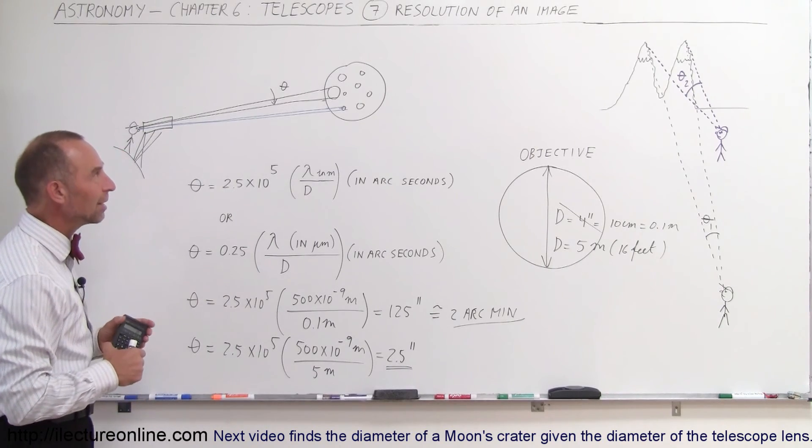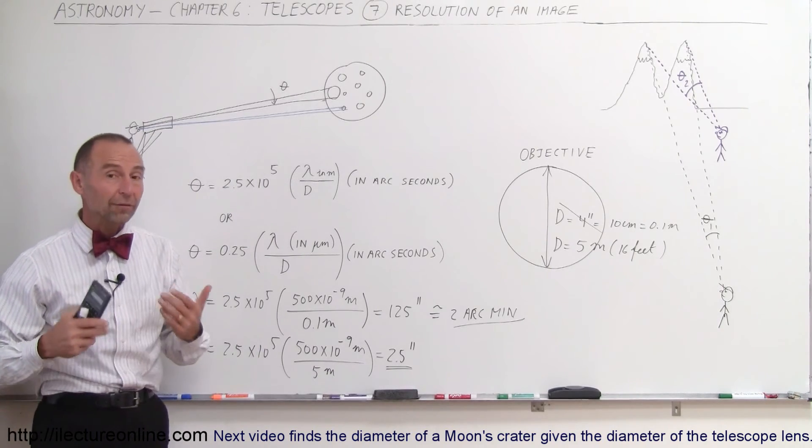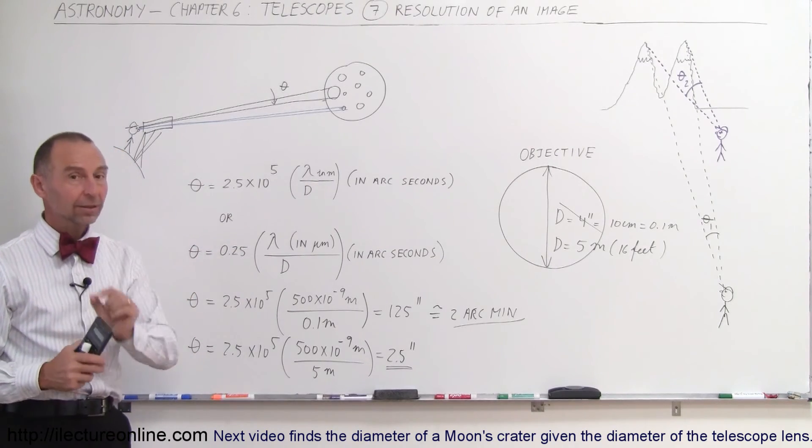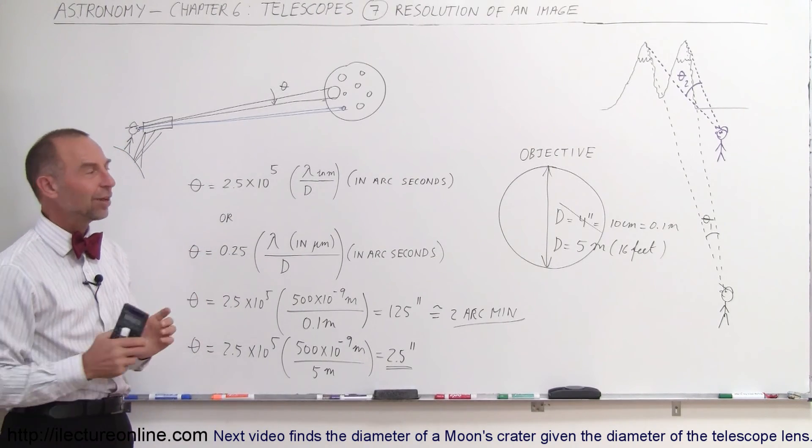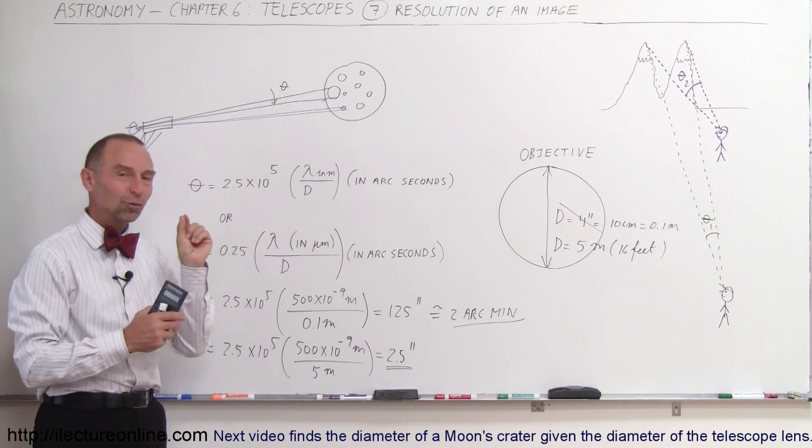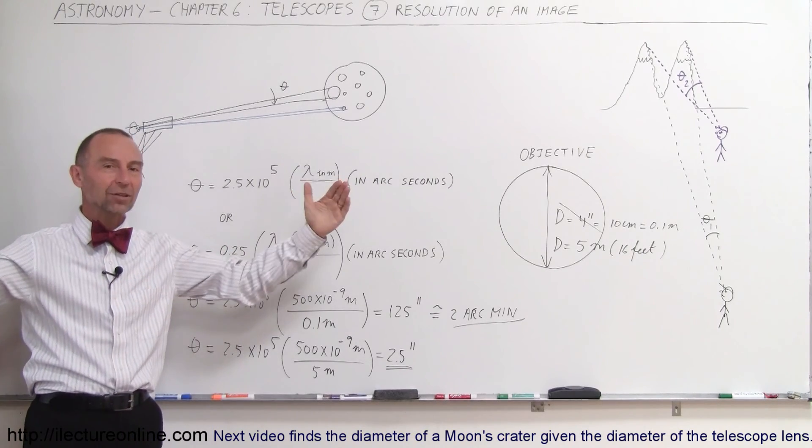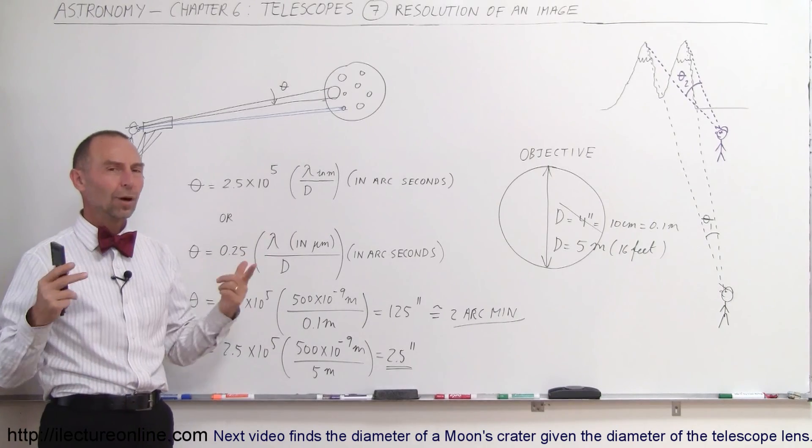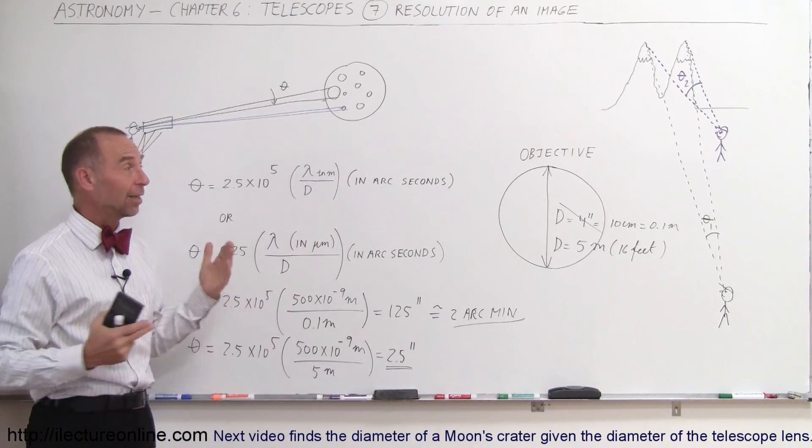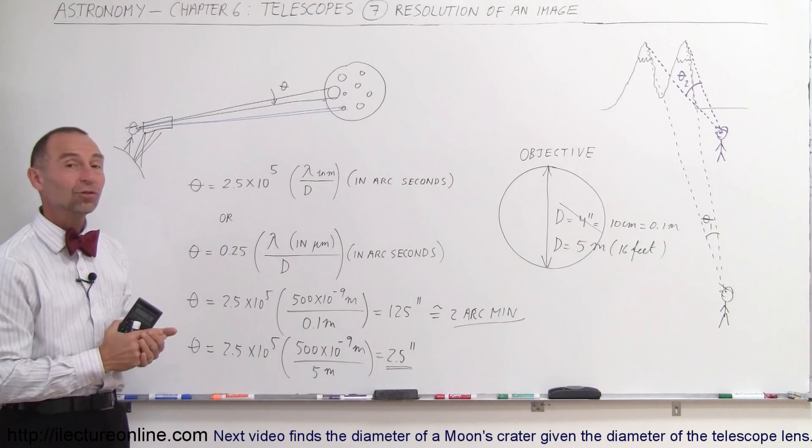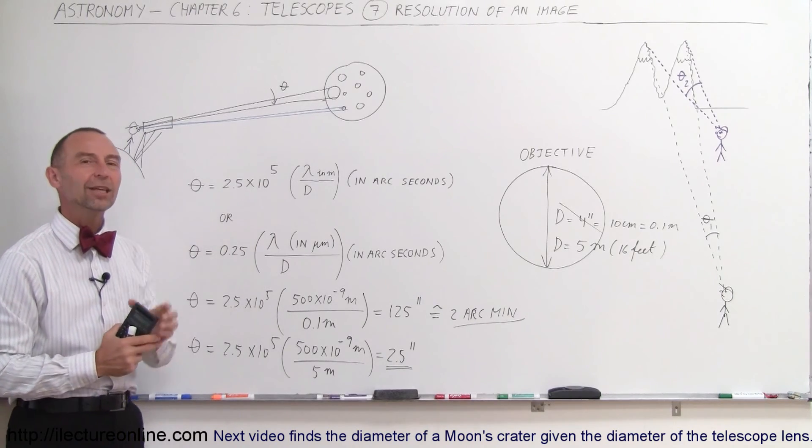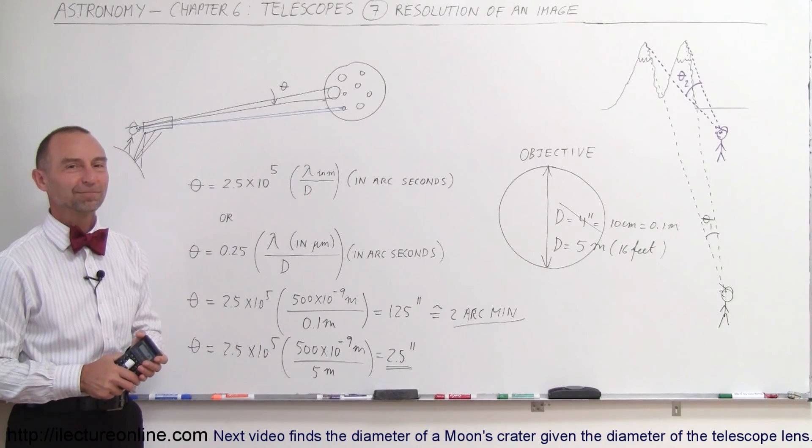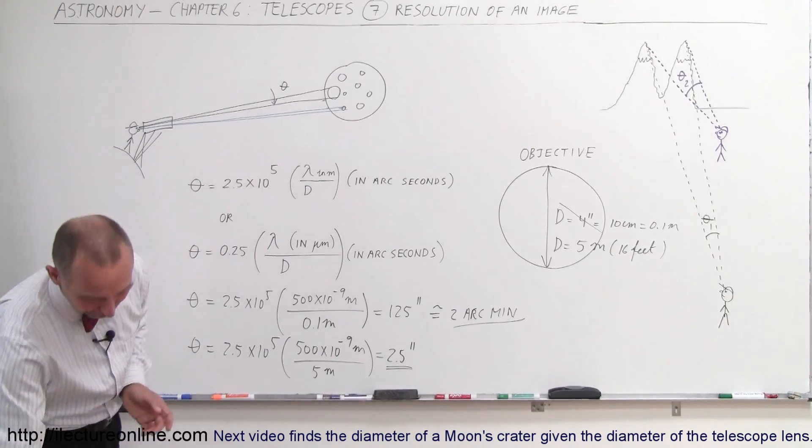So that gives you a pretty good idea about what we mean by the resolution of an image, or the resolution of what you're looking at. Again, smaller is better. And when we talk about the resolution angle, you get a better or smaller resolution angle with a bigger telescope. So if you want to get a good telescope, you want it to be big. One, because you can collect more photons. And two, you get a much smaller resolution angle, so you can see much finer detail on the pictures. And that's what I mean by the resolution of an image. Thank you.